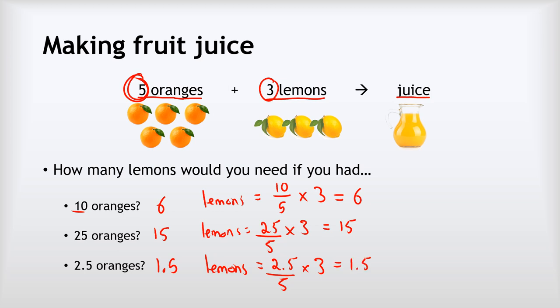Most of you can do that ratio maths intuitively when it's with nice things like oranges and lemons. We're going to be doing the exact same maths but with things like water and oxygen. Just hold this analogy in your head because the maths we'll be doing is the same.